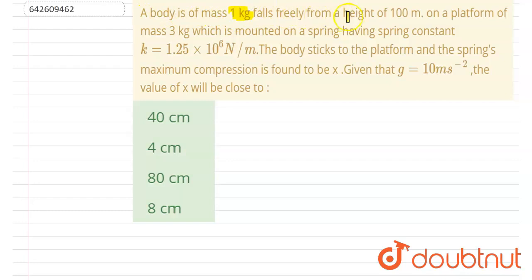falls freely from a height of 100 meters on a platform of 3 kg which is mounted on a spring having spring constant k = 1.25 × 10^6 N/m. The body sticks to the platform and the spring's maximum compression is found to be x. You have to find out the value of x.